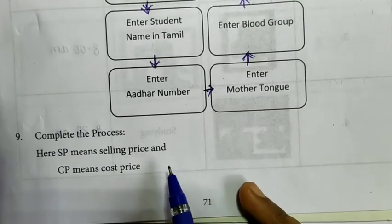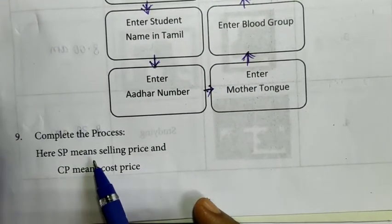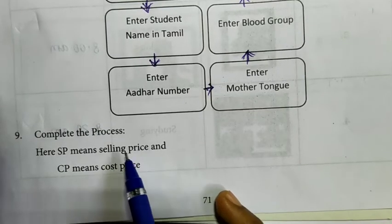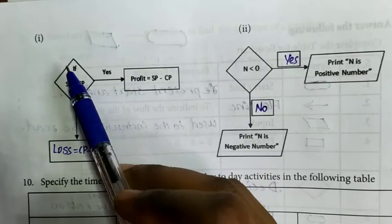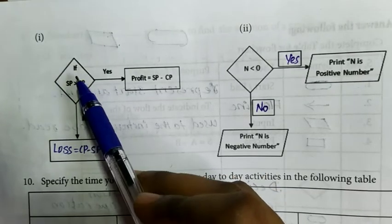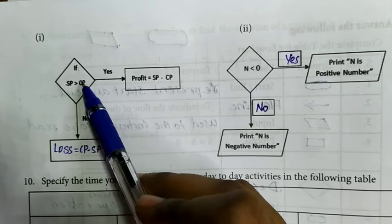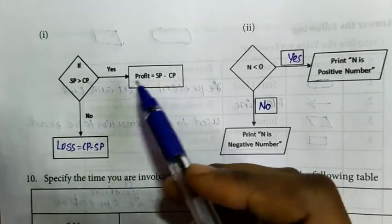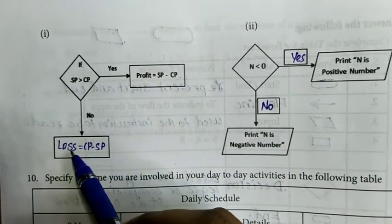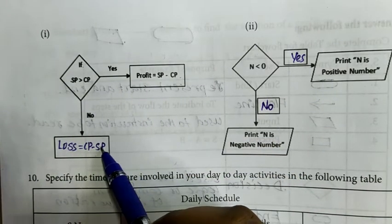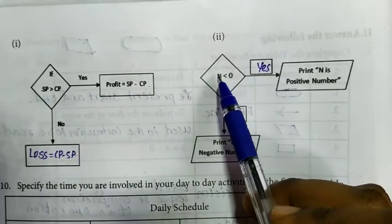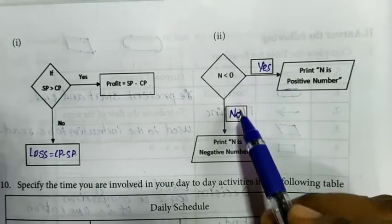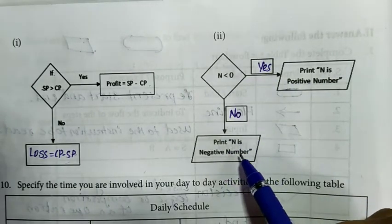Ninth question: Complete the process. SP means selling price and CP means cost price. This is a process diagram. Look at the first diagram. Decision box: if selling price greater than cost price, then yes, profit equal to selling price minus cost price. If no, then loss is equal to cost price minus selling price. Second question: N is less than 0. If yes, print N is positive number. If no, print N is negative number.